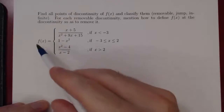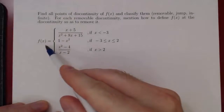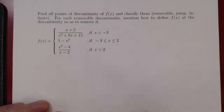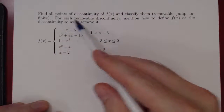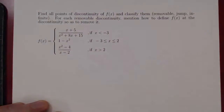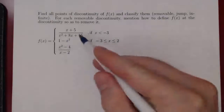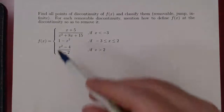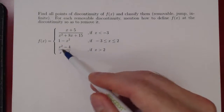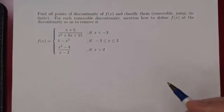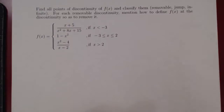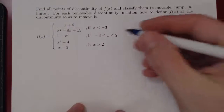Here's the problem. We have f of x given by piecing three functions together, and the question is finding all points of discontinuity of f of x and classifying the discontinuity as removable, jump, or infinite. The first thing is, we have two quadratic polynomials: x squared plus 8x plus 15, and x squared minus 4. So before we even look at discontinuities, let's factor everything.